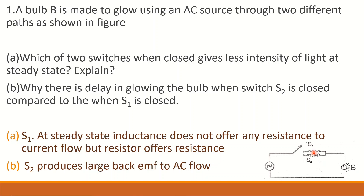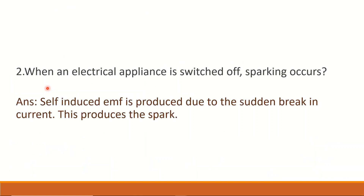For part B: S1 has the resistor and S2 has the inductor. S2 produces a back EMF due to self-induction, which causes a delay in the current building up. When an electrical appliance is switched off, sparking occurs.